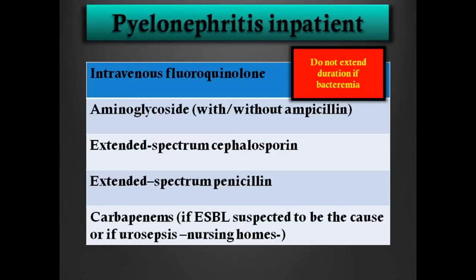Extended-spectrum cephalosporins — third and fourth generation — extended-spectrum penicillins, and carbapenems if you suspect ESBL colonization: Enterobacter cloacae, E. coli, and the patient has urosepsis coming from a nursing home. If you are thinking of Pseudomonas, use meropenem or imipenem. If the patient is bacteremic, it will be intermittent bacteremia, not continuous, so you do not need to extend the duration of treatment due to positive blood cultures — it's like pneumonia.